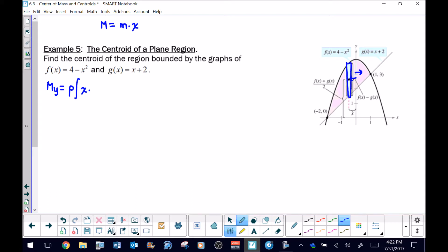For example five, we would end up with M sub y to be ρ times the definite integral, x is my distance. The function on top is 4 minus x squared, and the function on bottom would be x plus 2, all integrated with respect to x. We're going to use our boundaries from negative 2 up to positive 1.